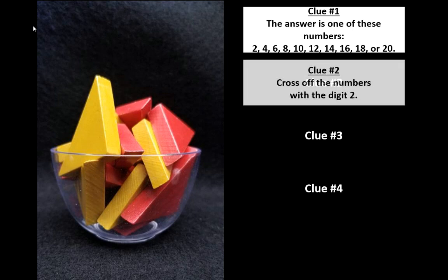Here's clue number two. Cross off the numbers with the digit 2. Does your estimate still work? If so, great. You don't need to do anything. If not, write down a new estimate. Press pause while you do so and then press play when you're ready to continue.